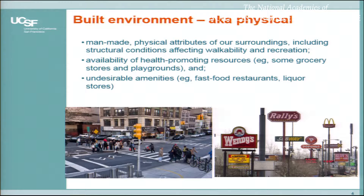So in neighborhood environment research in the public health world, we think about it in terms of built environment — sometimes also called the physical environment. This usually refers to physical attributes of our surroundings: structural conditions, walkability, recreation, crosswalks, speed limits, open spaces, parks, play areas, and then availability of health-promoting resources such as grocery stores and fast food places. Also included are playgrounds, small food markets, other positive health-promoting resources, and then also undesirable amenities like fast food places and liquor stores.